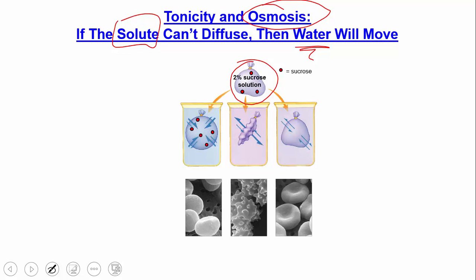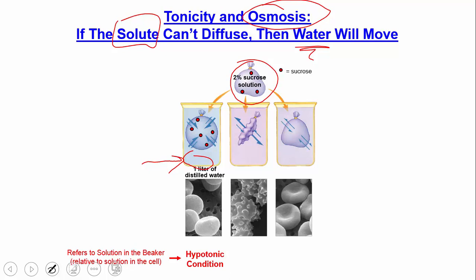Consider three scenarios with a cell containing 2% sucrose. In the first scenario — hypotonic — there is a lot of solute inside the bag but very little or none in the beaker. 'Hypo' means too little, referring to too little solute in the beaker relative to the cell. Because the sucrose can't move, water moves into the cell to dilute the molecules inside. This causes the cell to swell and potentially burst — which is why IVs use saline solution rather than pure water.